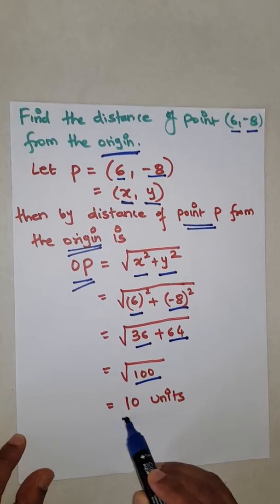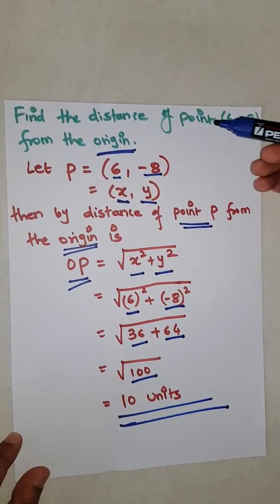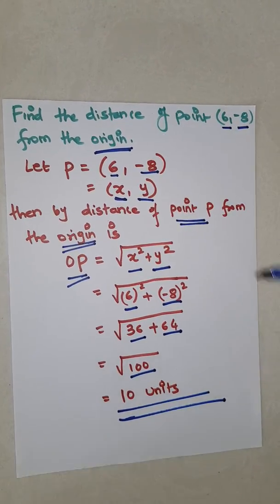At the end, root of 100 will give you 10 units. This indicates the distance of the point, that is six comma minus eight, from the origin. Thank you.